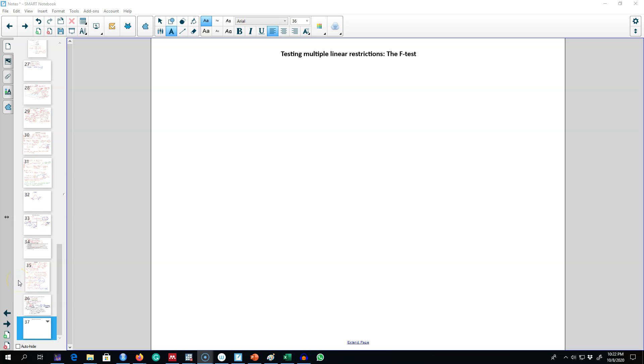So far I have covered hypotheses involving only a single restriction, that is about only one particular slope coefficient value. But frequently we want to test multiple hypotheses about underlying parameters. To do that, I'm going to introduce you to the F-test.